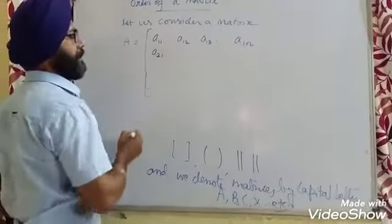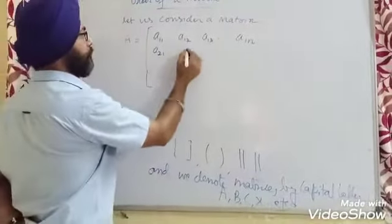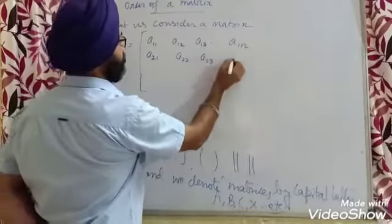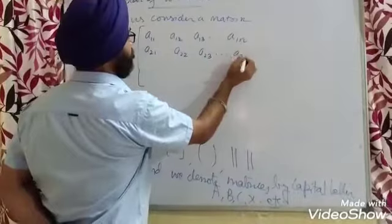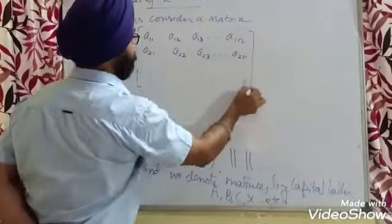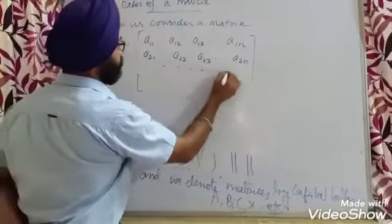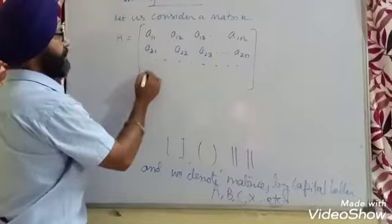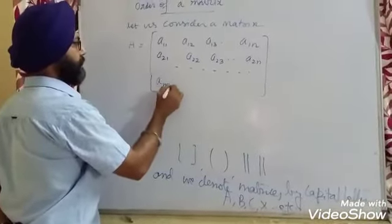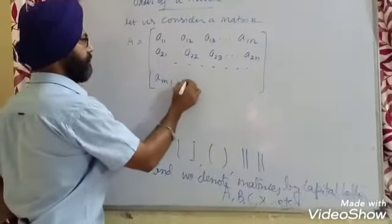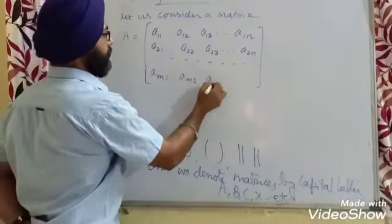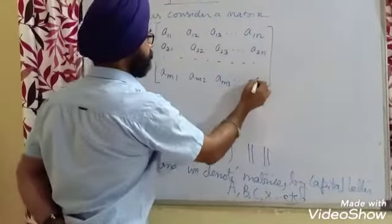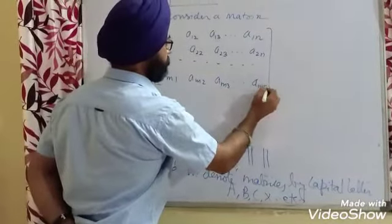Let us make entries in the second row: A21, A22, A23, and so on. Likewise, keep making entries. The last row has AM1, AM2, AM3, until the last entry is AMN.